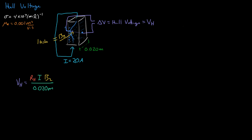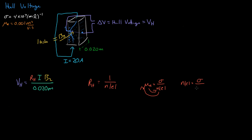So now let's solve for RH. RH is actually equal to 1 over the number of electrons per cubic meter (N) times the electric charge of an electron (e). We don't really know what N is, but we have another equation: the electron mobility is equal to the conductance of the material divided by N times e. So we just solve this equation for N·e and then plug it in. We get N·e is equal to sigma over mu_E.